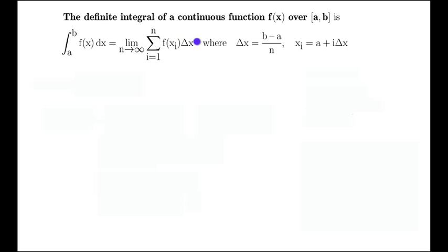Sum i equals 1 to n of F of X_i delta X. This is the sum that we've been constructing before. It's a right sum. It takes the function value at the right end point times the width of the interval. We're going to take the limit as n tends to infinity so that we get more and more terms in this sum as n increases to infinity.